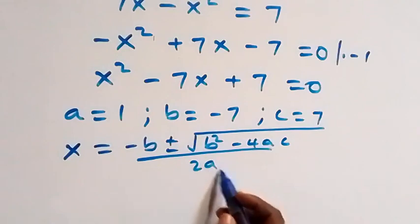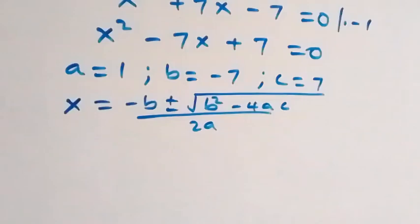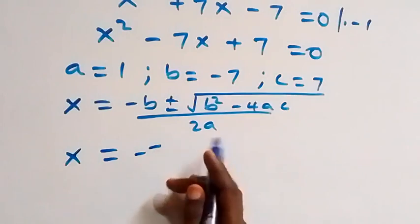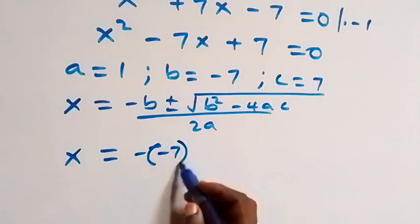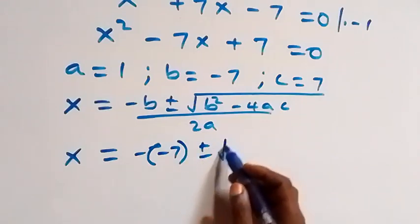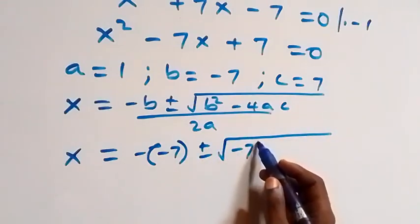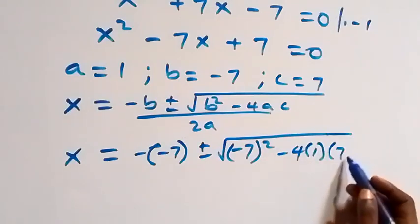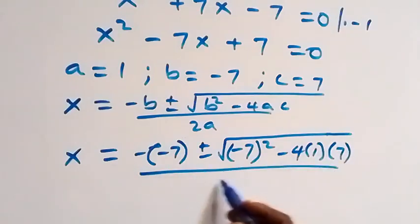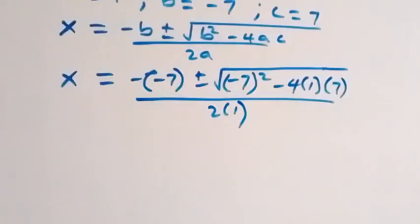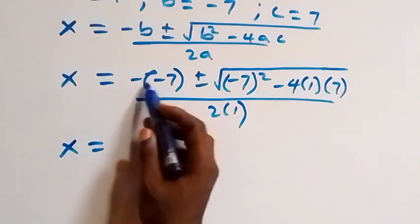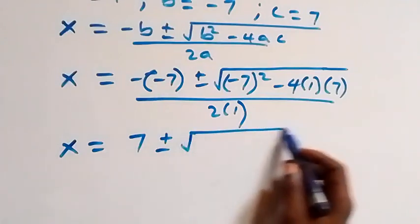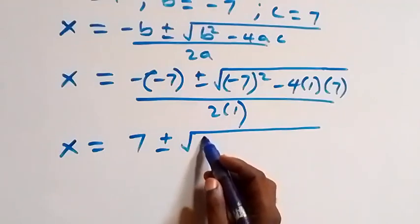Substituting: x equals negative (negative seven) plus or minus square root of (negative seven) squared minus four times one times seven, over two times one. That is seven plus or minus square root of 49 minus four times one times seven.